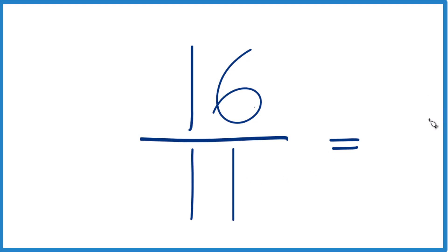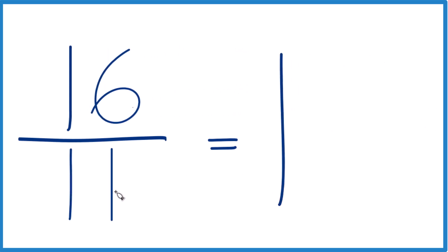So 11 goes into 16, 1 times 11 is 11, and then we'd have 5 left over. We'll just keep the 11 the same here as the denominator. And 16 elevenths, that equals the mixed number 1 and 5 elevenths.